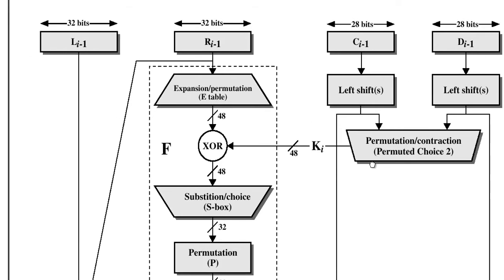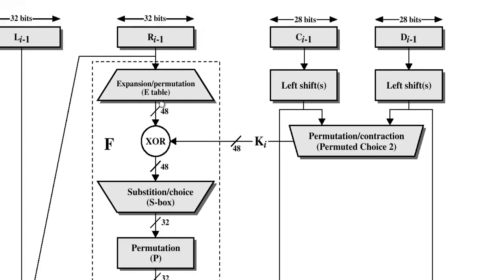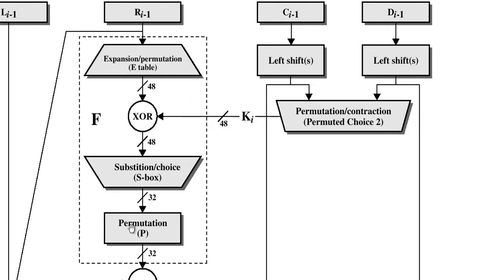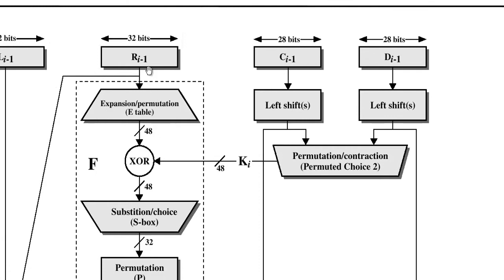In the encryption process, R(i-1) is copied to L(i), and L(i-1) moves to L(i). The expansion step (E table) is needed because the data block feeding into the round is only 32 bits, but the round key is 48 bits. We must expand the data from 32 to 48 bits so that an XOR operation can be performed with the key. The 48-bit expanded data is XORed with the round key K(i).